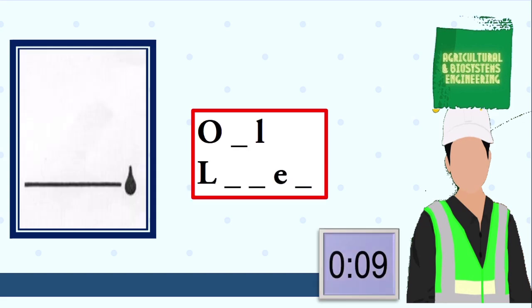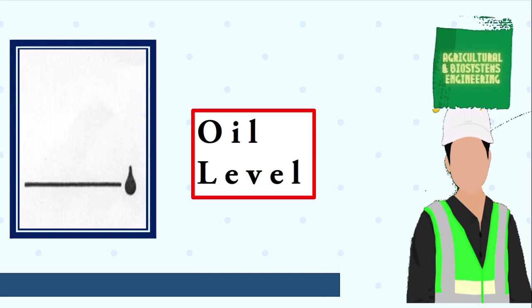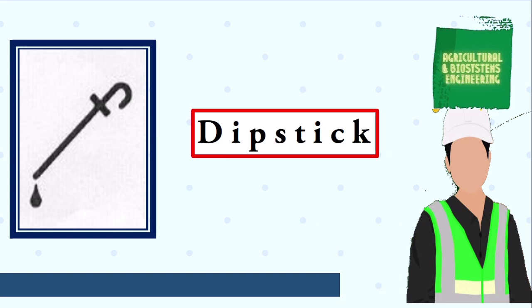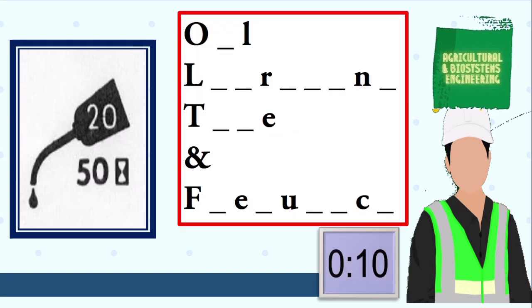Next symbol, your 10 seconds starts now. The answer is oil level. Next symbol, your 10 seconds starts now. The answer is dipstick.